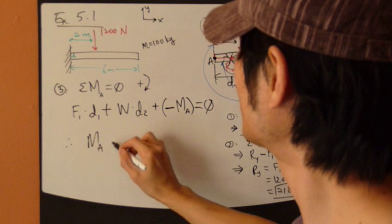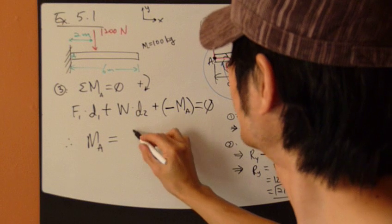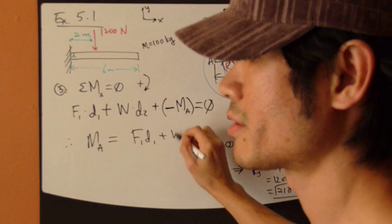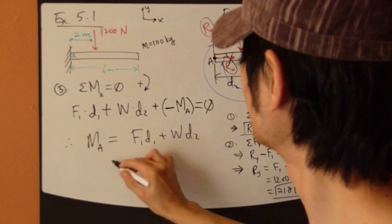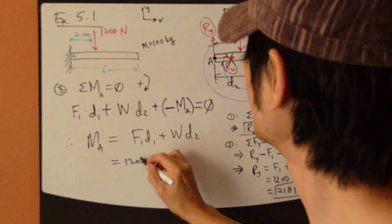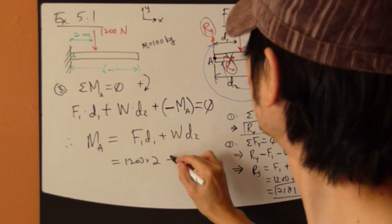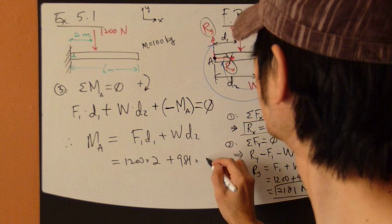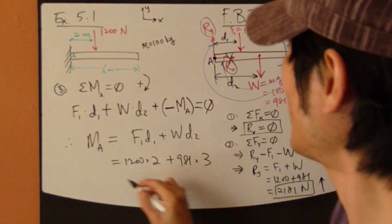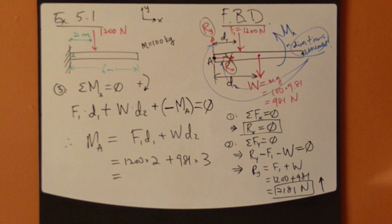Plug in numbers. Twelve hundred times two meters plus 981 times three meters. Half the length. Plug in numbers.